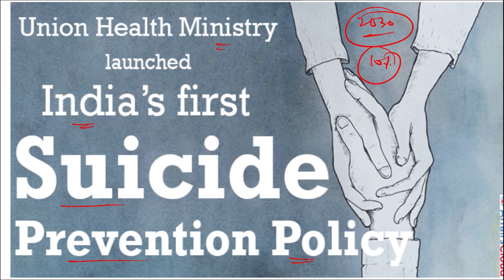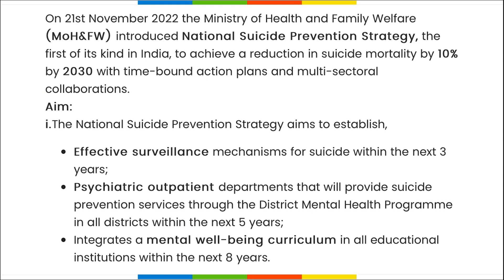Suicide impacts not just the individual but also family members, friends, and the entire circle. Studies show that when a person in a family dies by suicide, the risk for other family members also increases, as they are mentally aware of the incident and may be at greater risk themselves.